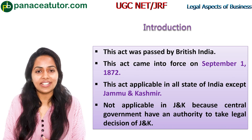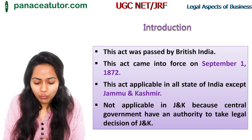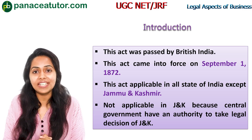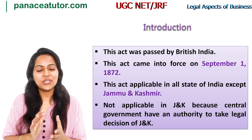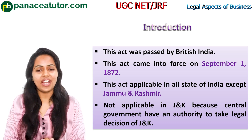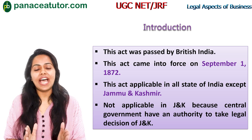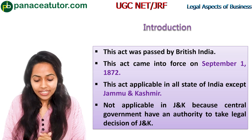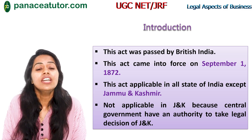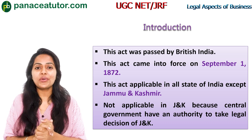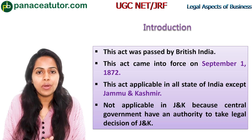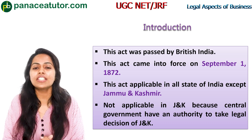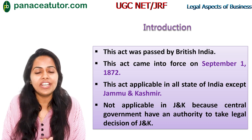Let us begin with the introduction of the Indian Contract Act 1872. This act was passed by British India and implemented on 1st September 1872. It was inspired from the English Contract Act — so you can say that the British gave the Contract Act to India. This act is applicable in all states of India except Jammu and Kashmir, because the central government has authority to take legal decisions regarding Jammu and Kashmir. A common exam question is: in which state is the Indian Contract Act 1872 not applicable? The answer is Jammu and Kashmir.